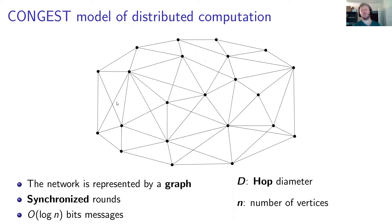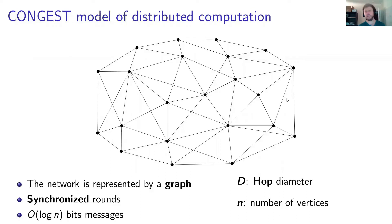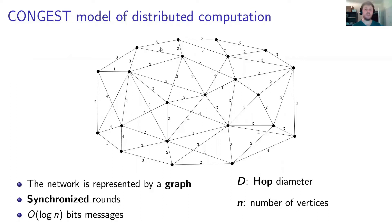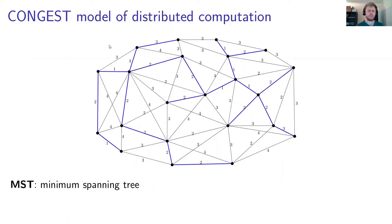The parameters we will care about are d, the hop diameter, which is kind of the length of any path or number of hops you need to get between any pair of vertices, and n, the total number of vertices. In addition, the graph will have weights over the edges. Note that weights do not affect in any way the time it takes to send the next message — it's just some type of cost or distance. And the goal is to compute some function with respect to these weights.